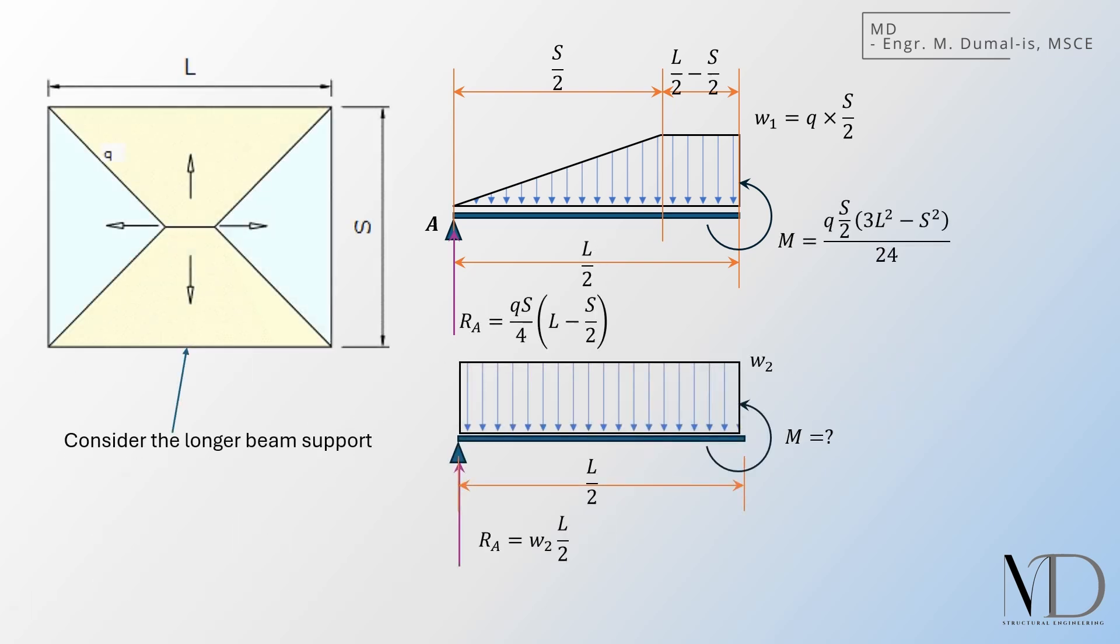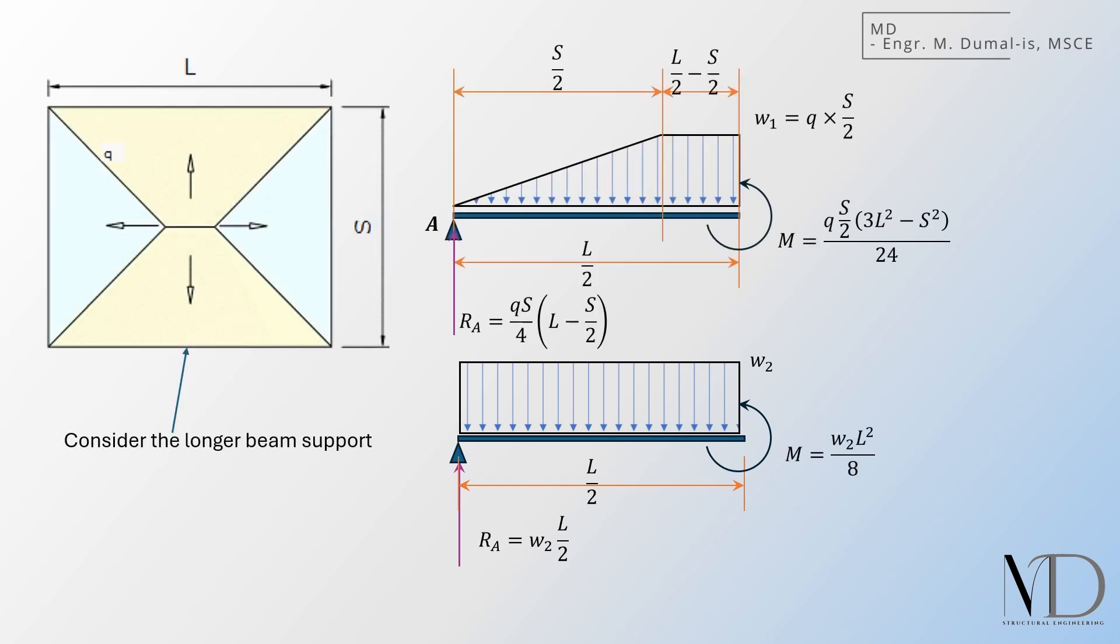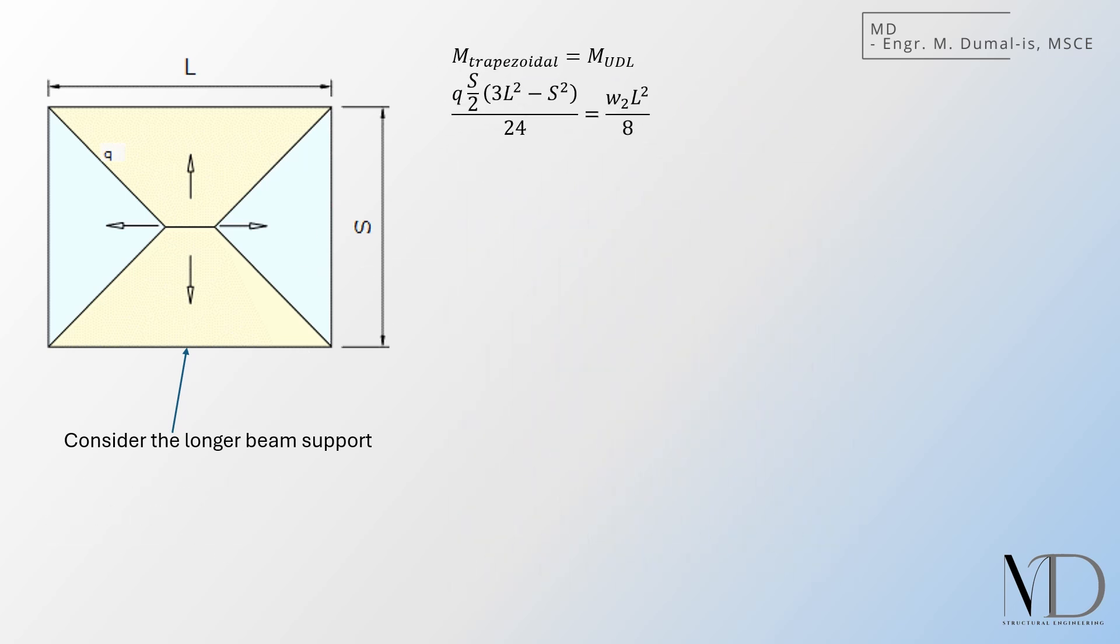The same process is used for the UDL. We then assume that the maximum moments are equal, isolate W2, and replace the ratio of S and L with the aspect ratio M. The final equation for the equivalent UDL using equivalent maximum moment is obtained.